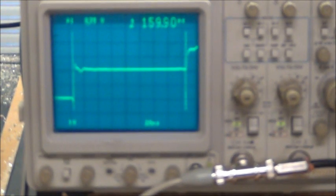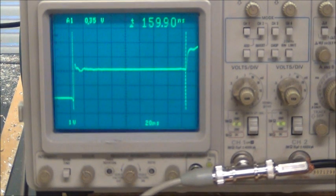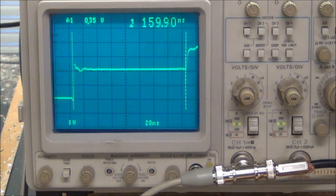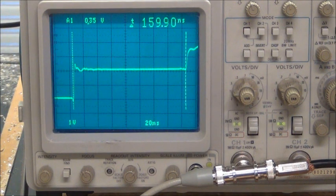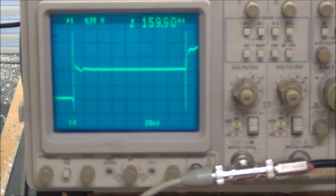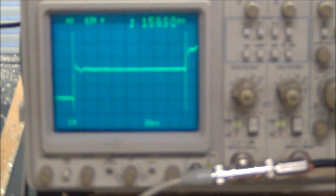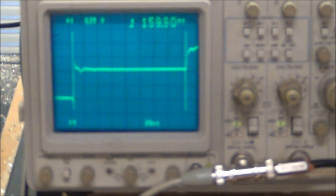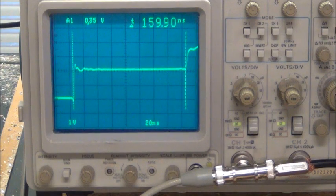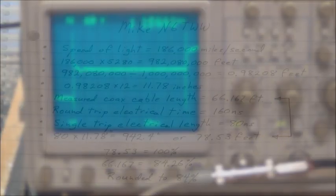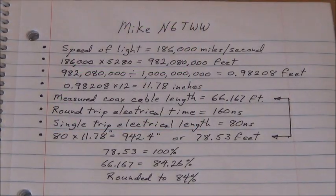So if I took that measurement of 157 feet and divided it by two, I would actually come out with 78.53 feet. And if I then took that dimension and divided it into the actual length of the coax, which is 66.167 feet, I would come up with a velocity factor of approximately 84 percent. So that's what I'm going to use to calculate how long to cut my coax.